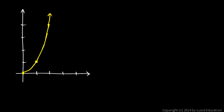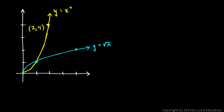That's y equals x squared, and it goes through the point 2 comma 4. Now let's look at its inverse, which would be the square root of x. That also goes through 1,1 and 0,0, and it goes through 4 comma 2. So here we have the function y equals the square root of x, and this is y equals x squared, with the point 2,4 and the point 4,2.